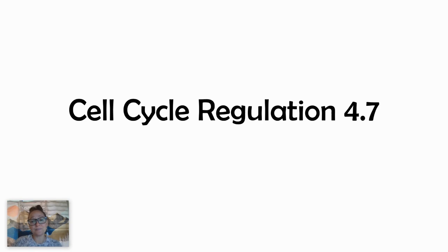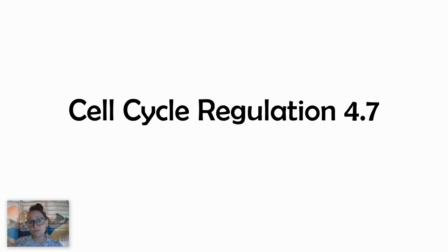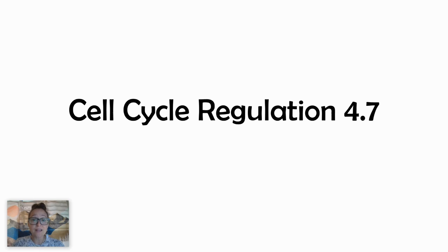This video is made for AP Bio topic 4.7. Here we'll discuss external regulation of the cell cycle about growth factors, as well as internal regulation like cyclins and cyclin-dependent kinases. Towards the end, we'll also talk about errors in cell cycle regulation which lead to cancer — including oncogenes, proto-oncogenes, tumor suppressor genes, and examples like the RAS protein and P53.